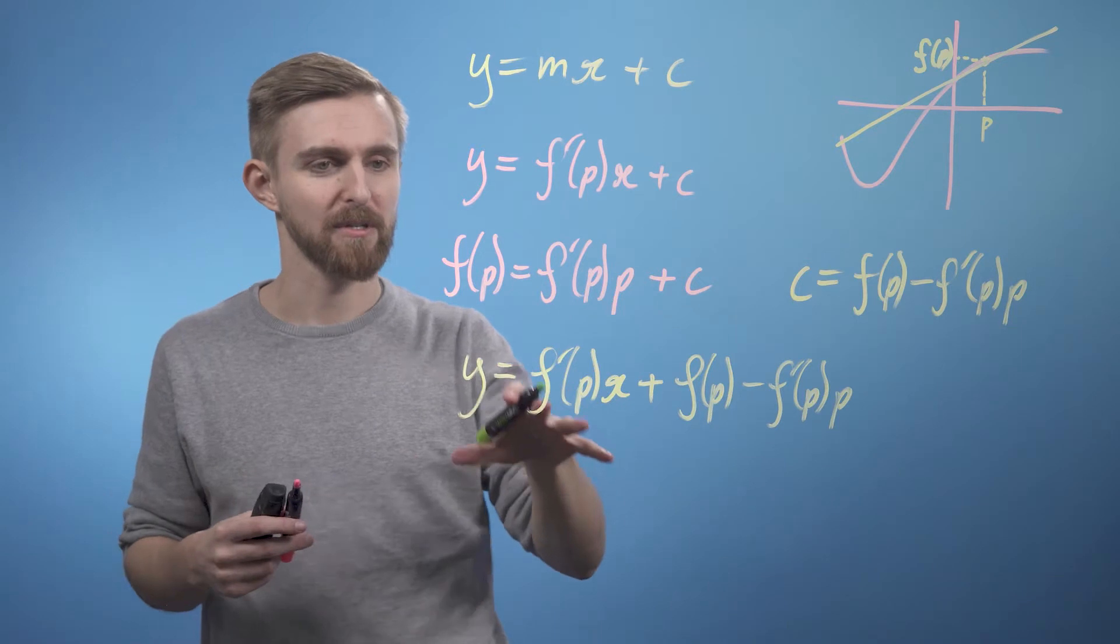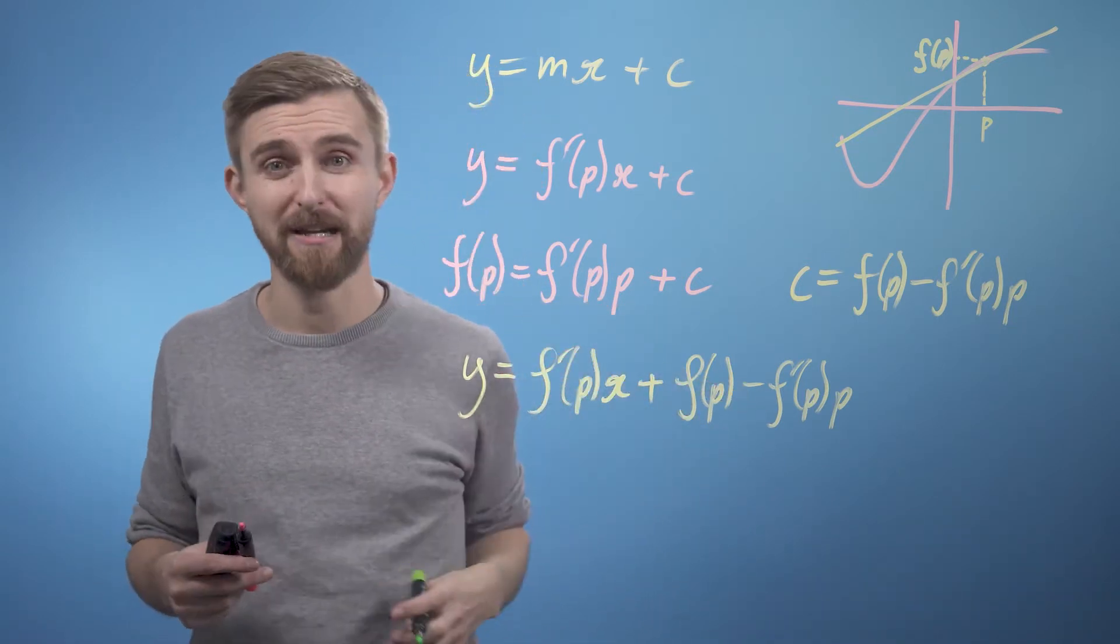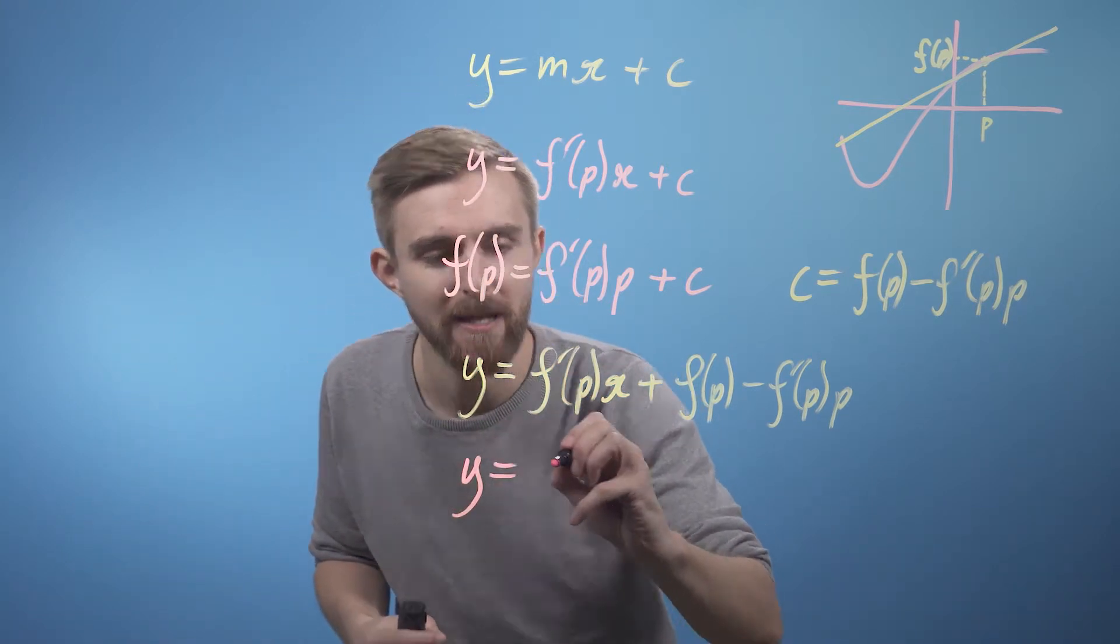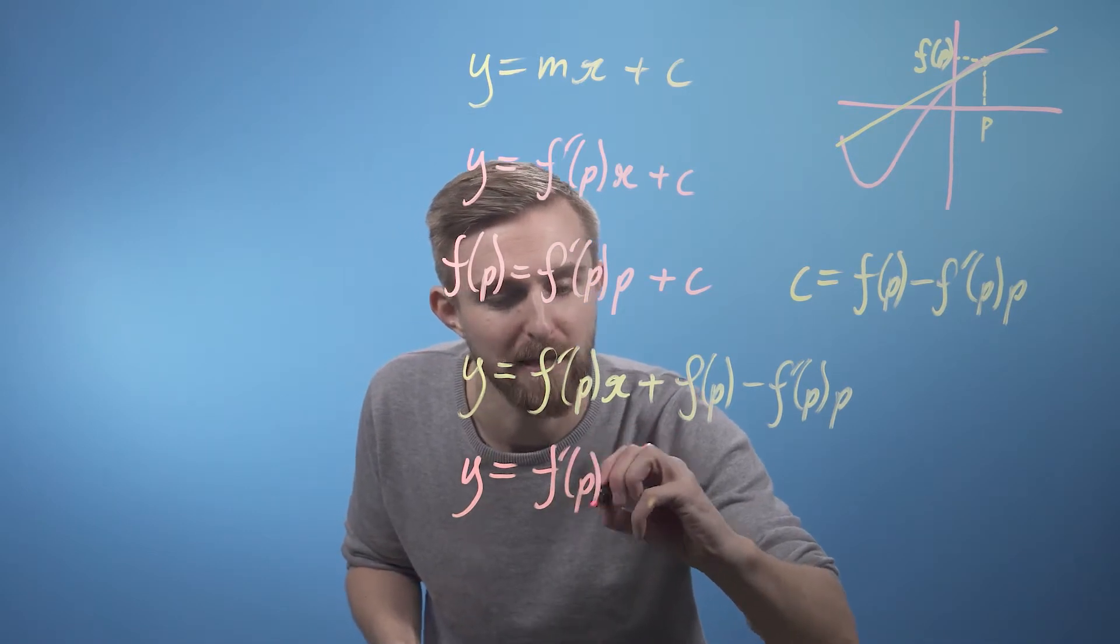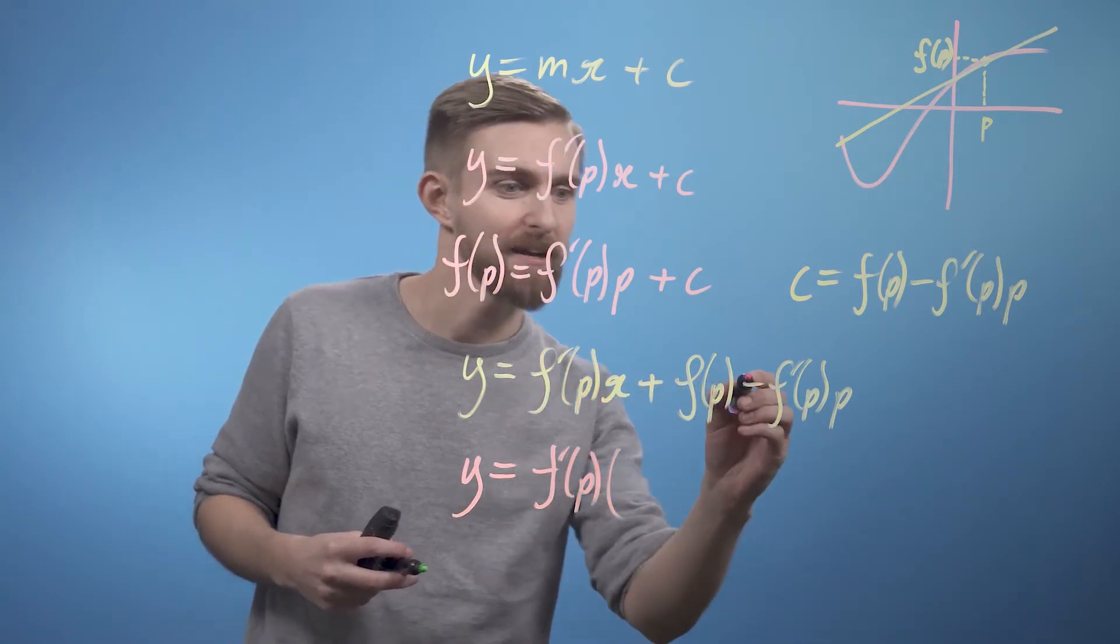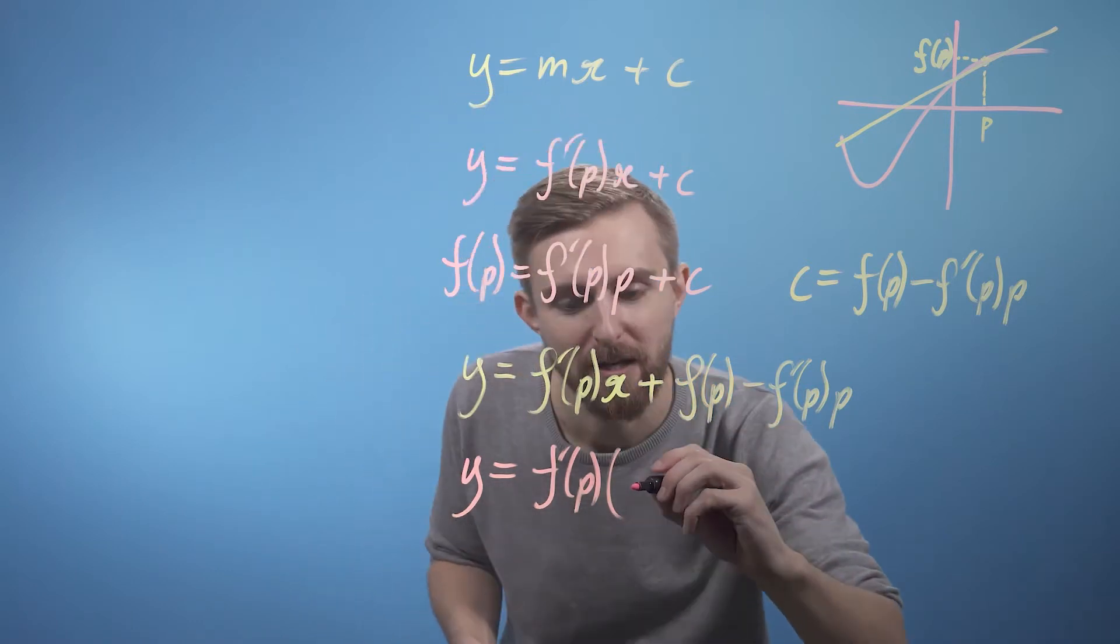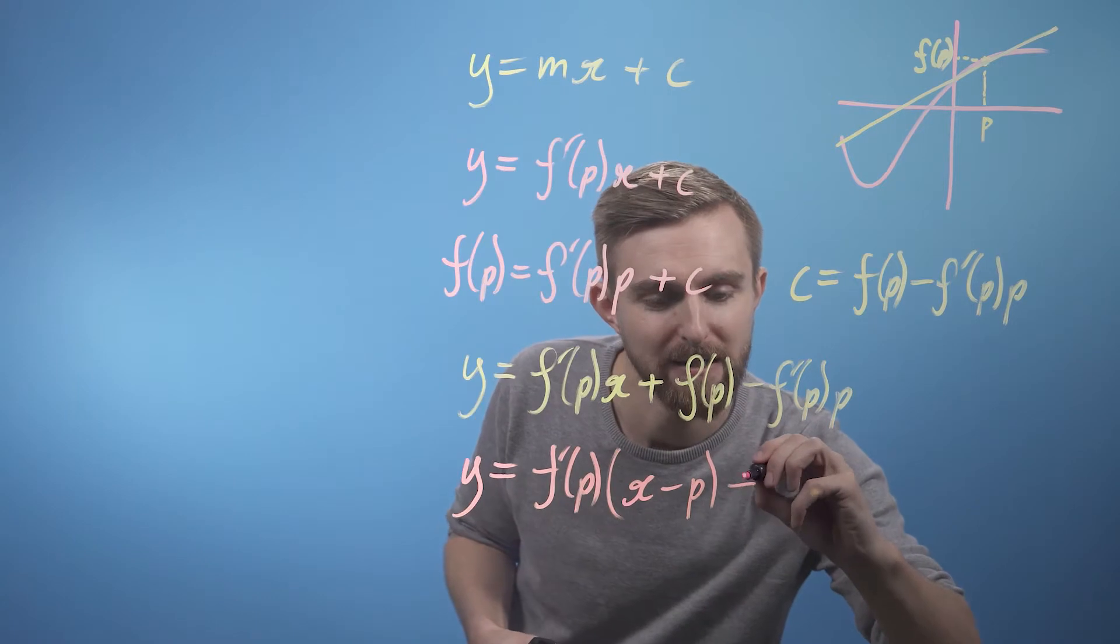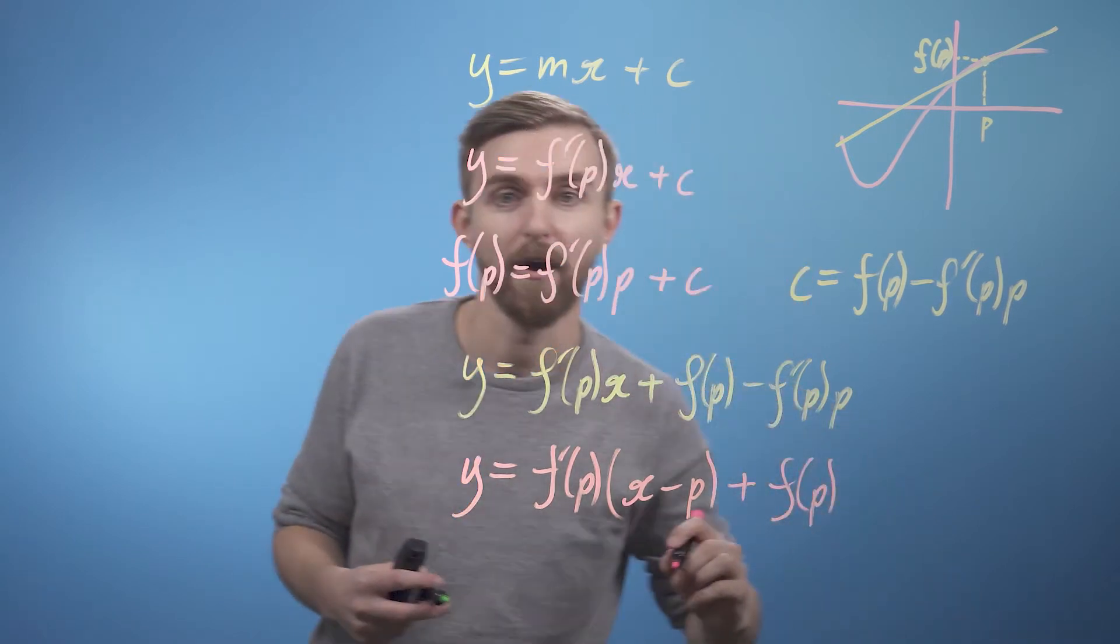Okay, now the last thing I'm going to do is take this and factorize this f' out. And that will leave you with a nice form of this expression. y = f'(p) multiplied by, there's an x of it here, and there's a minus 1 of it here, and minus p of it here. So we can say (x - p) plus just this term here, f(p).